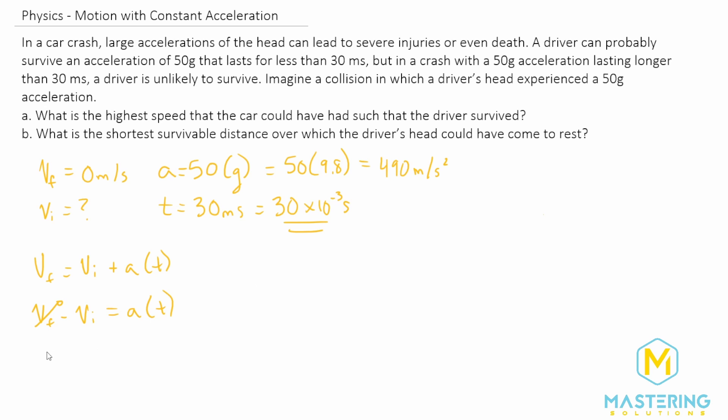So now we have V final negative is equal to acceleration times time. So now what we want to do is we want to multiply both sides of the equation by negative one.